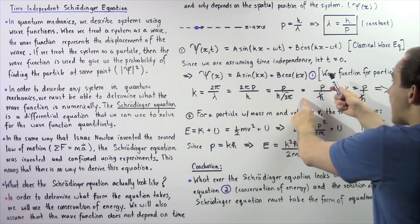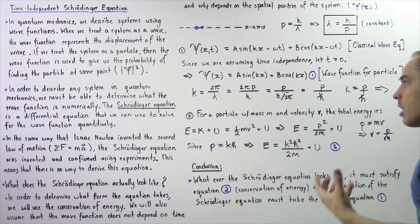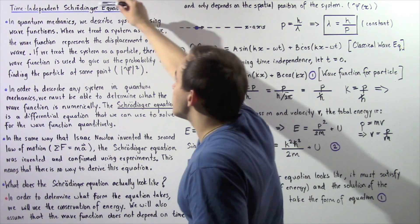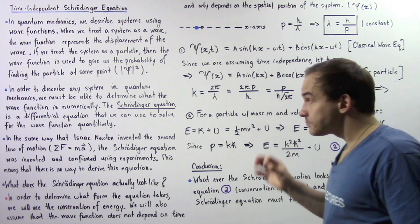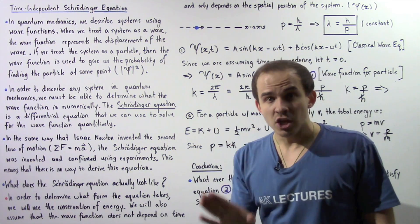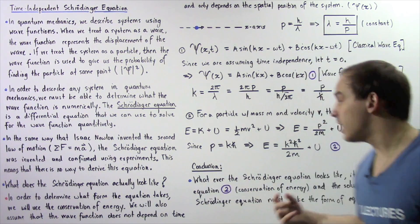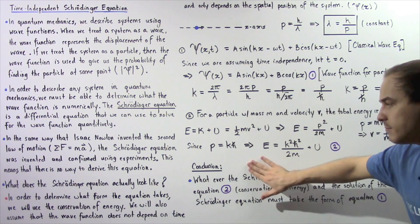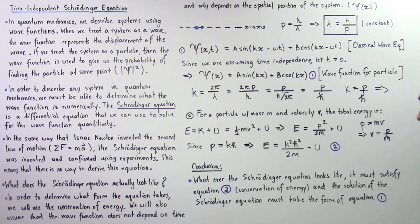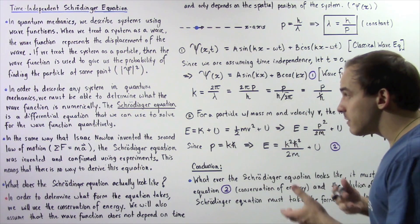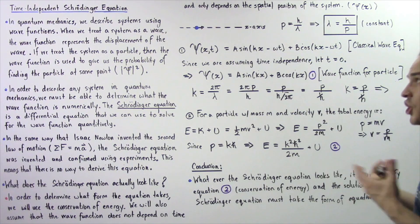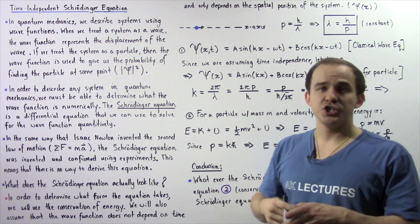From step 1, equation 1 gives us the general form of the solution — the wave function — which is the solution of the Schrödinger equation. From step 2, equation 2 tells us that whatever the time-independent Schrödinger equation looks like, it must satisfy equation 2. We conclude: the Schrödinger equation must satisfy equation 2 (from conservation of energy), and its solution must take the form of equation 1. We'll use these two facts to determine what the equation actually looks like.